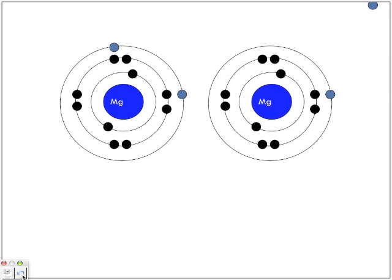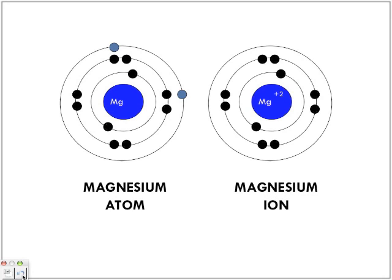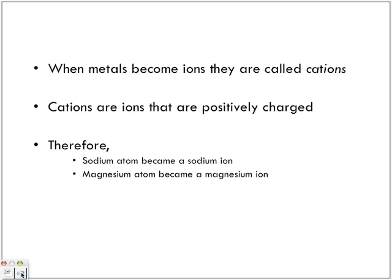Let's look at magnesium. We were able to remove two electrons — magnesium atom and a magnesium ion. Notice again: full valence shell, but now it's the inner shells inside. It lost those two electrons and picked up a plus two charge because it lost electrons. Magnesium ion. Metals lose electrons. When metals become ions, they are called cations. Think about the T — for positive ions. Cations are ions that are positively charged. Therefore, a sodium atom becomes a sodium ion, a magnesium atom becomes a magnesium ion. There is no name change.